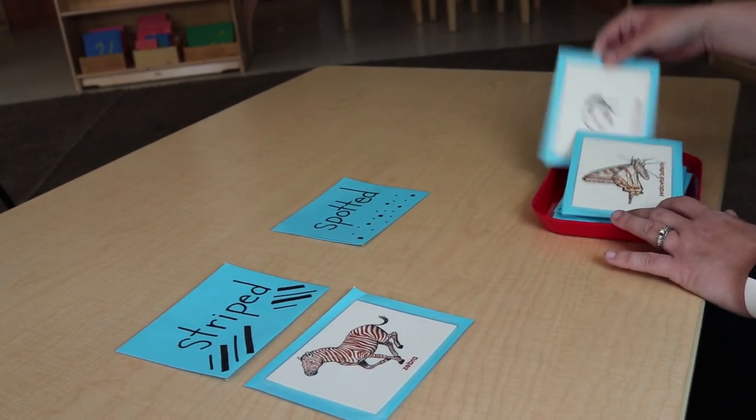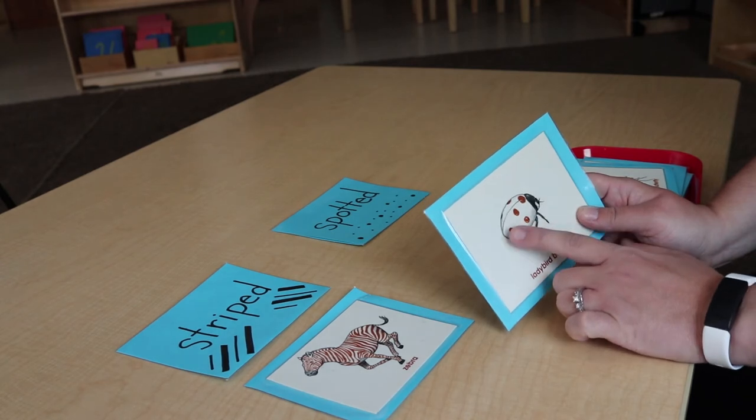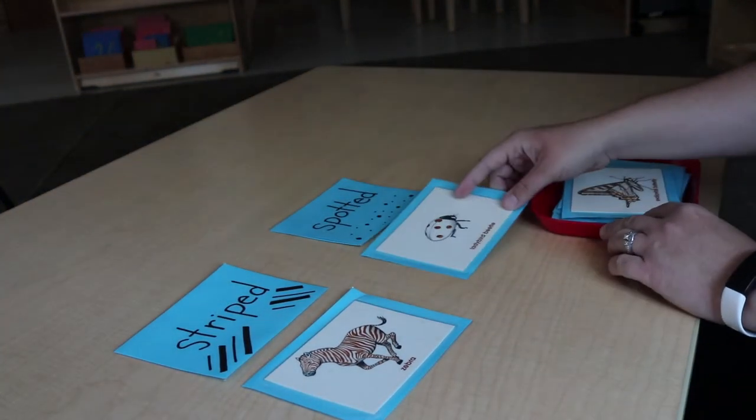Or, a ladybug. It has dots on its back. And dots are another word for spotted.